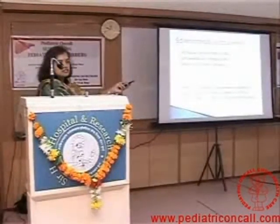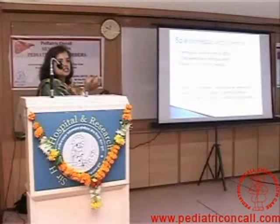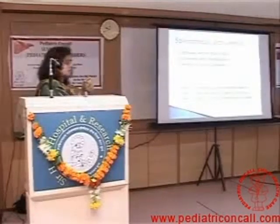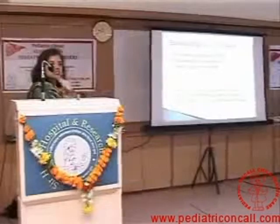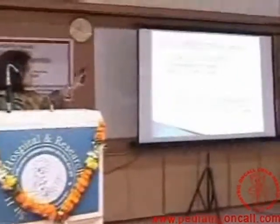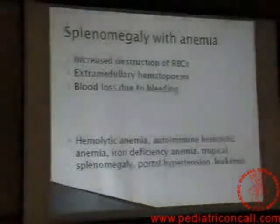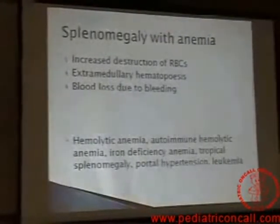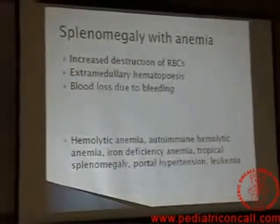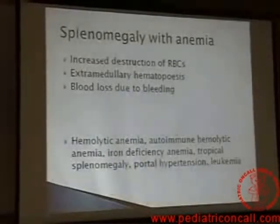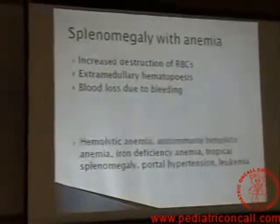Blood loss can occur due to bleeding. If bleeding is occurring, that means either it is hypersplenism, portal hypertension, or the child has a coagulopathy because the liver is not forming clotting factors. So when I see splenomegaly with anemia, causes to keep in mind are hemolytic anemia, autoimmune hemolytic anemia, iron deficiency anemia, tropical splenomegaly, and portal hypertension. If we think logically, we understand. Either bone marrow is not forming, the spleen is destroying, or there is some infiltrate in the marrow causing blood loss.